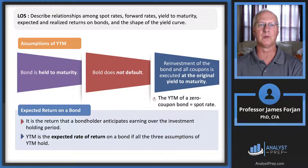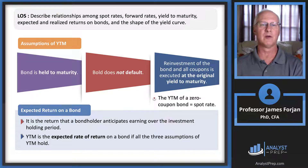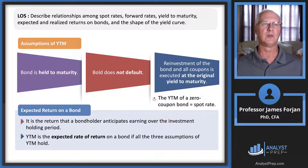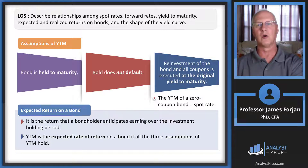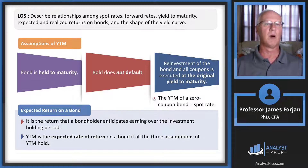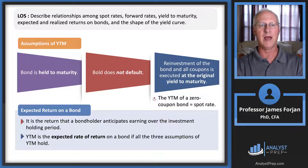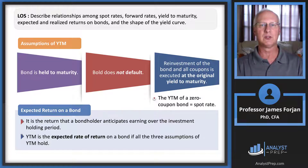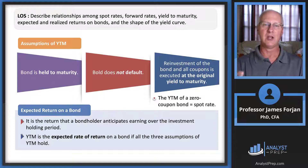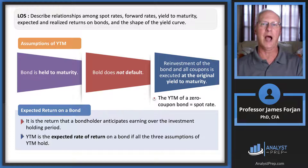Yield to maturity — as I learned it in graduate school — was always called the required return on the bond. The idea is that a bondholder allows a government entity or corporation to borrow capital and charges an interest rate in return: the yield to maturity on the bond.